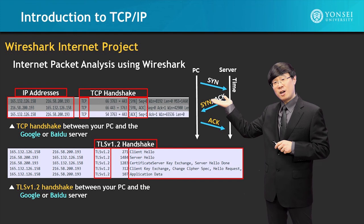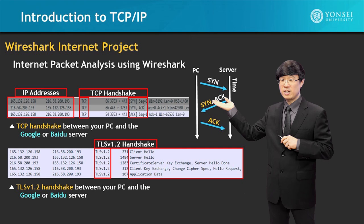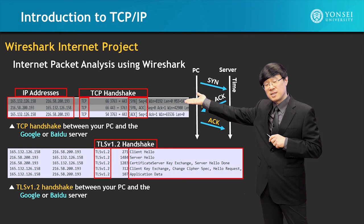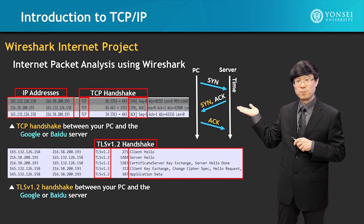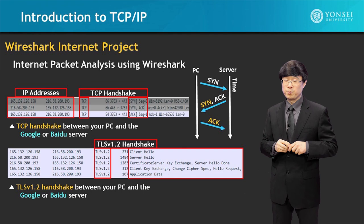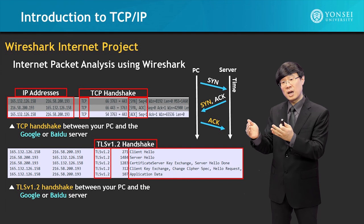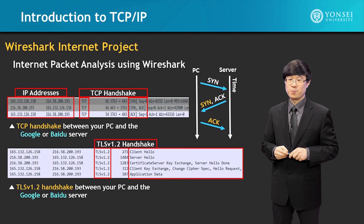One snapshot of a Wireshark capture of actual activity going on through the Internet connection and your PC is demonstrated here, where you can see the source IP address, destination IP address, including the TCP handshake operation. In addition, the TLS security handshake operations are also shown. We will be making connections and actually downloading a file from a Google Drive or a Baidu Drive — that will be the test experiment that we do.